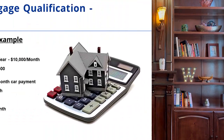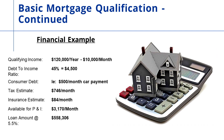In this example, 45% of $10,000 is $4,500 a month. Let's say they have consumer debt of $500 a month for a car payment. We'll assume real estate taxes of $746 a month and insurance of $84 a month. Subtracting that $500 from $4,500 gets us down to $4,000; then subtracting $746 and $84 leaves us at $3,170 for principal and interest.